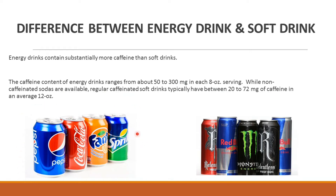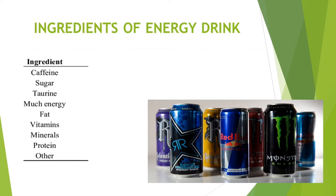This is how soft drinks look like and this is how energy drinks look like. Let's move further to the ingredients of energy drinks. First is caffeine, second is sugar, third is taurine, fourth is energy, fifth is fat, sixth is vitamins, seventh is minerals, eighth is protein, and other ingredients depending on the type of energy drink.